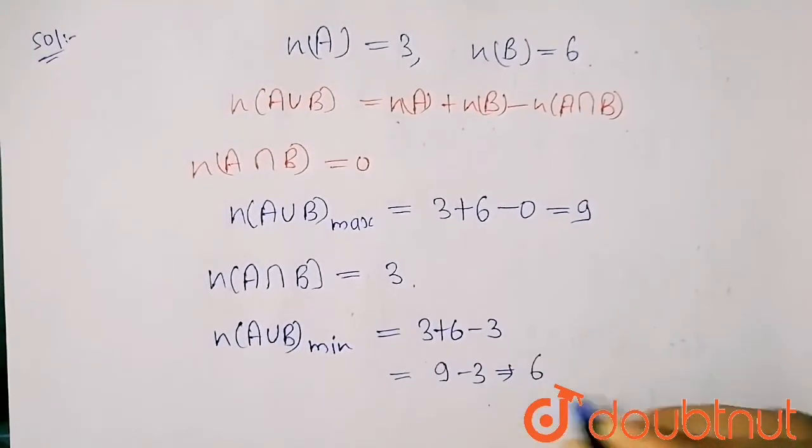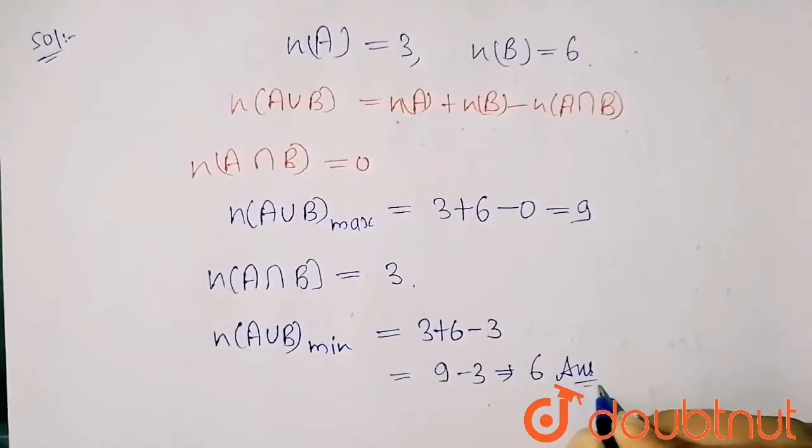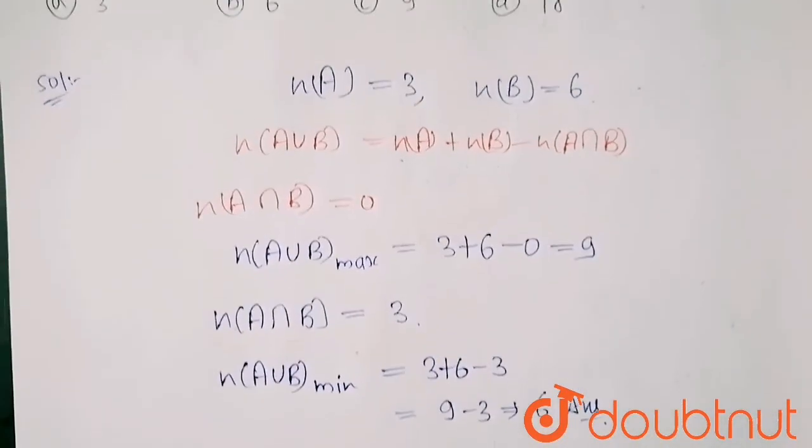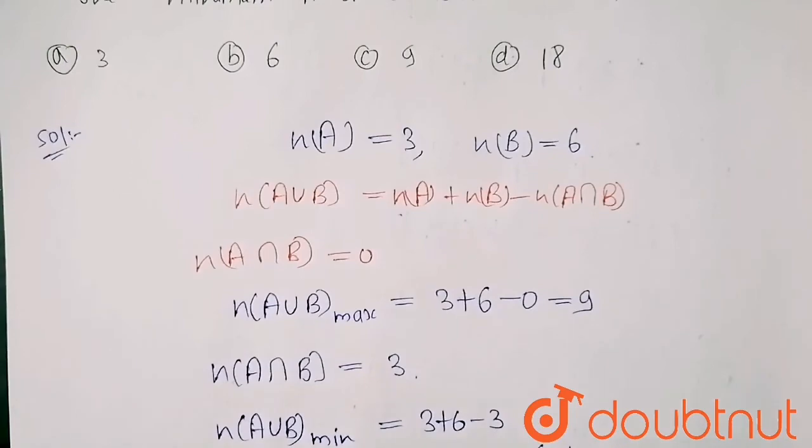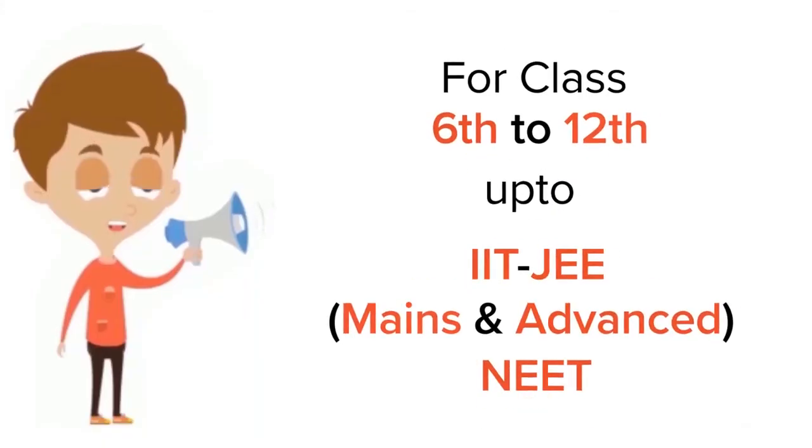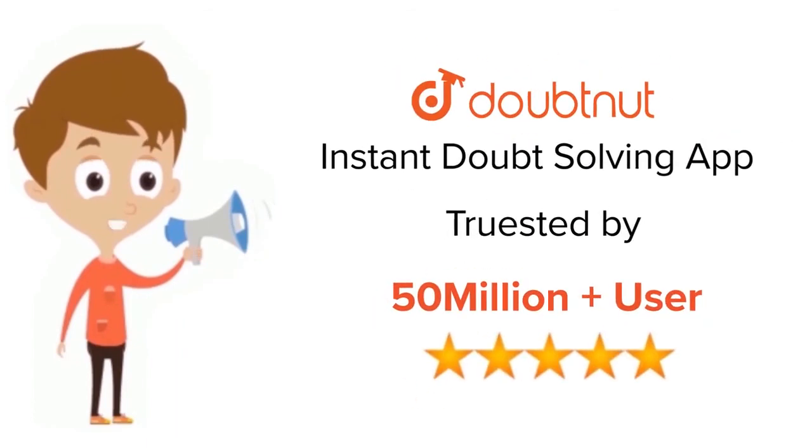So my minimum number of elements will be equals to six. From the options, my B option will be correct. Thank you. For class six to twelve, IIT-JEE and NEET level, trusted by more than five crore students, download Doubtnet app today.